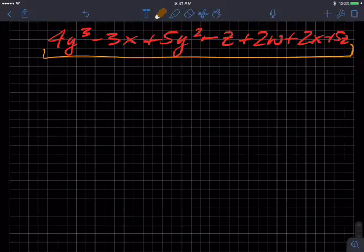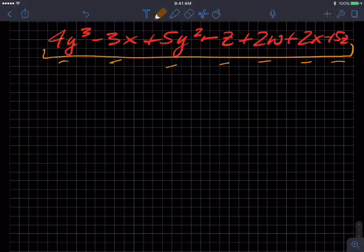And of course, we have variables and constants or numbers joined by various operations. All right, how many terms are there? One, two, three, four, five, six, seven. Terms are separated by addition and subtraction.